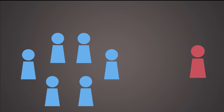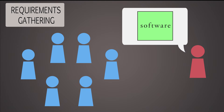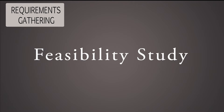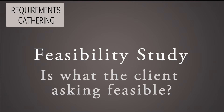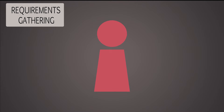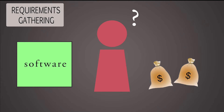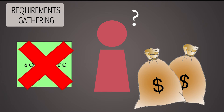The first step is gathering client requirements. This is when the client tells the software developers what they want a possible software to do for them. A feasibility study is also run to check if the software that the client is demanding is realizable. In fact, the client usually doesn't know much about software, and it is up to the software engineers to understand whether what the client is asking is too expensive or unreasonable.